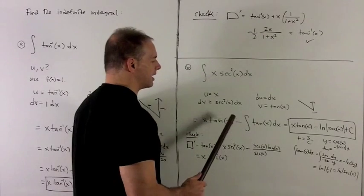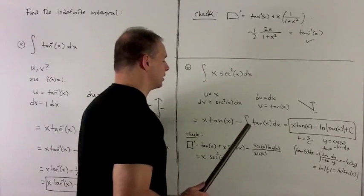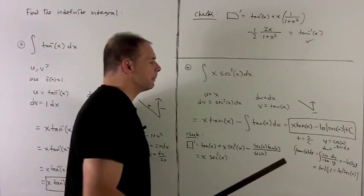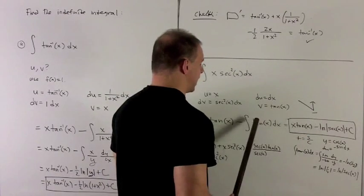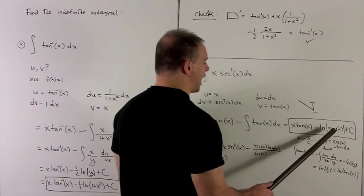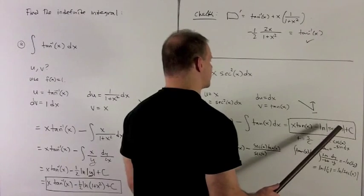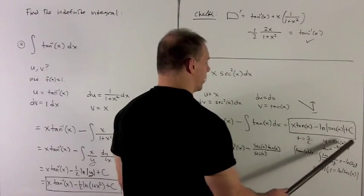Integrated. So I have x tan x minus tan x dx. Looking up your formula, you're going to see that the antiderivative of tan x is just natural log absolute value of secant x plus a constant. So we get our answer here.